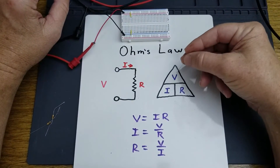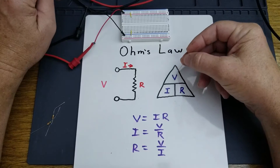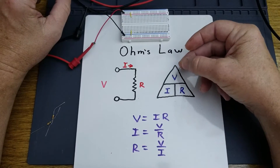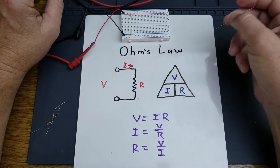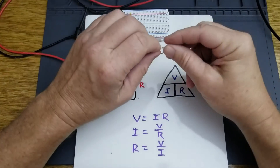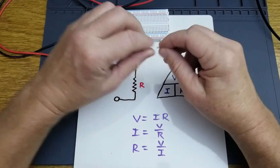The Ohm's Law triangle can help you calculate voltage, current, or resistance in such a circuit.